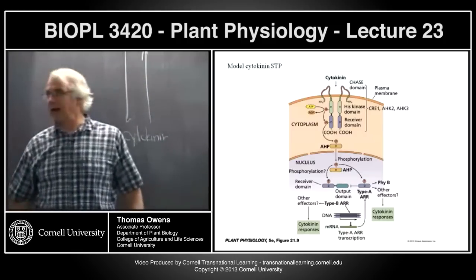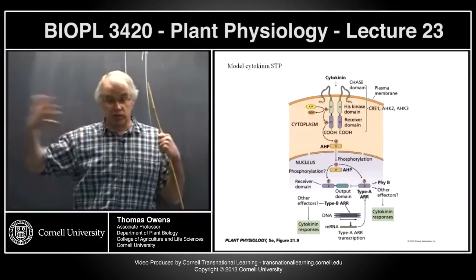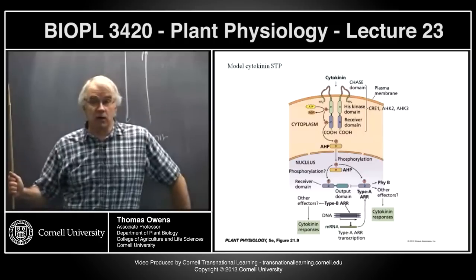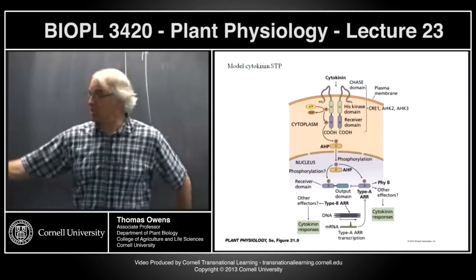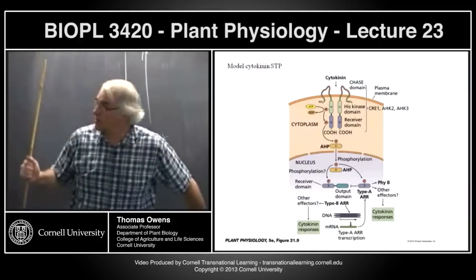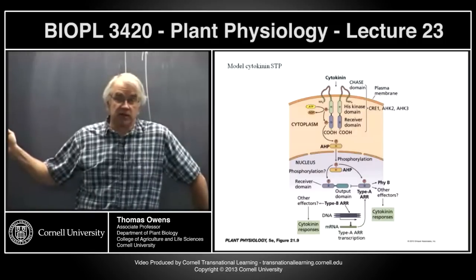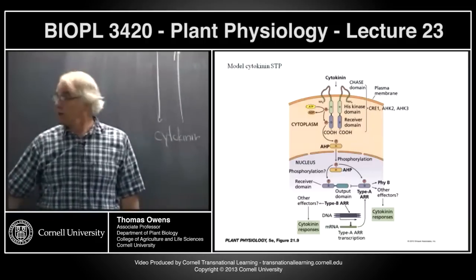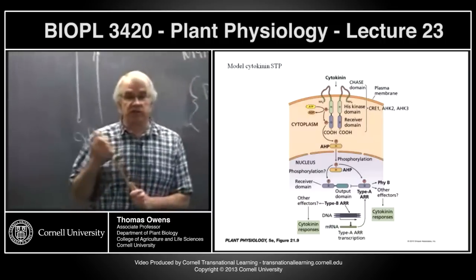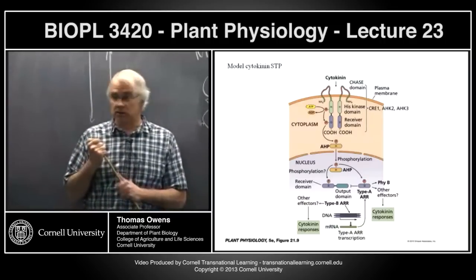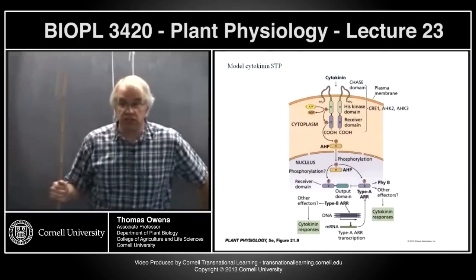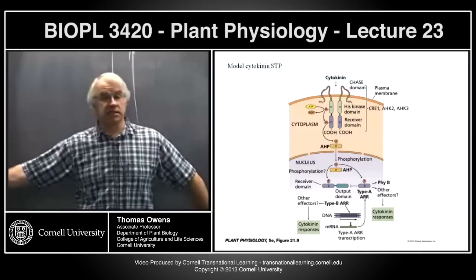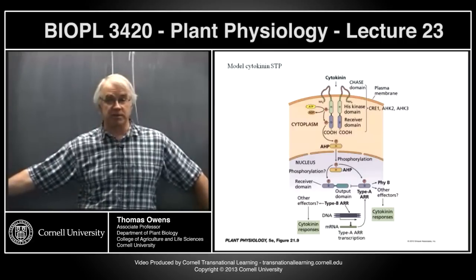One of the common genes turned on in all cytokinin responses is the type A ARR protein — the one lacking the output domain. This type A ARR, essentially an early gene, is turned on immediately by cytokinin and feedback inhibits the type B ARRs, keeping them from binding to DNA and producing more product. This limits the cytokinin response — you turn on lots of cytokinin-dependent genes, but the accumulation of type A ARR eventually shuts down continued transcription.